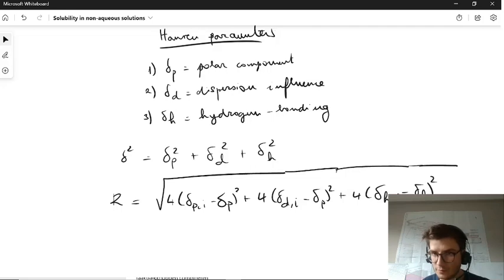So what does this equation actually tell us? Now we're actually looking at the three different components and see what the difference is between them both, between the solute and otherwise the solution itself. The delta p are the polar components, the delta d is the dispersion, and the delta h are the hydrogen components.